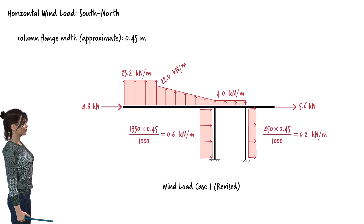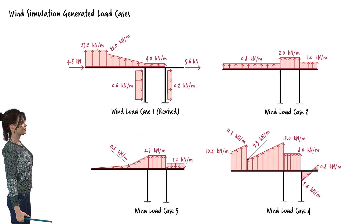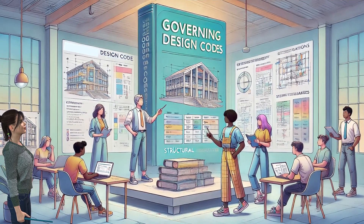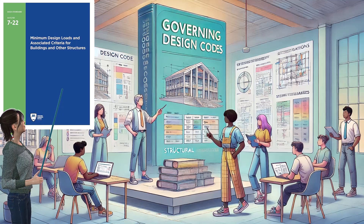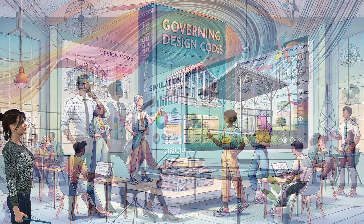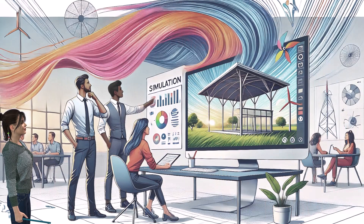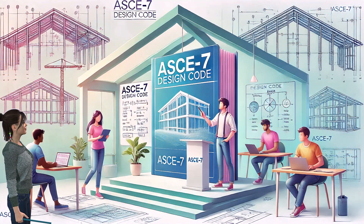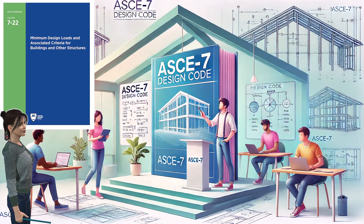In summary, our digital wind tunnel simulation yielded four loading cases for design consideration. To meet regional or national design requirements, it is essential to derive design loads from governing design codes and specifications, such as the ASCE minimum design loads criteria, rather than relying solely on simulation results. While simulations can enhance understanding of wind-structure interactions, their outcomes are not valid for actual design unless they comply with relevant building codes and standards. This course will use ASCE specifications, which provide crucial guidelines and safety factors to ensure structural integrity and compliance with U.S. building codes. In the next lecture, we will use the ASCE 7 provisions to determine wind loads for our canopy and then compare them with the results from our digital wind tunnel simulation.